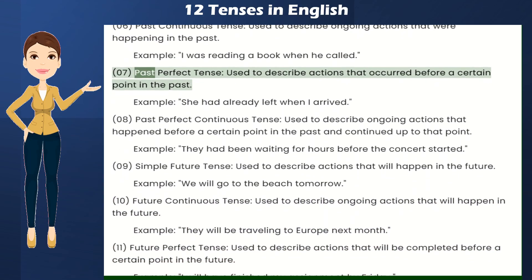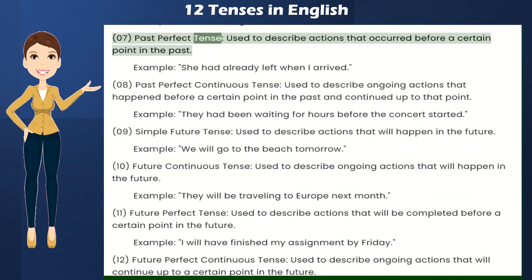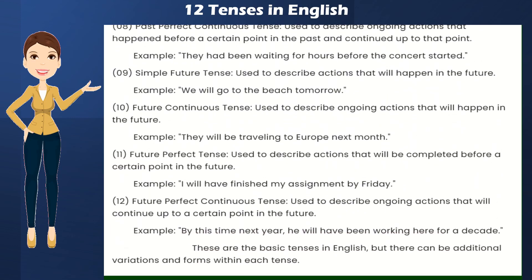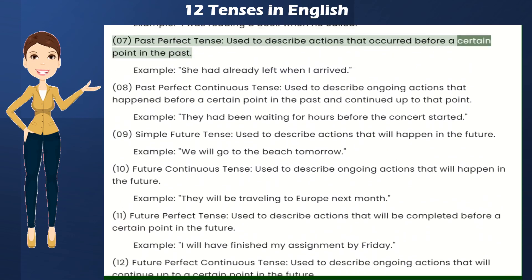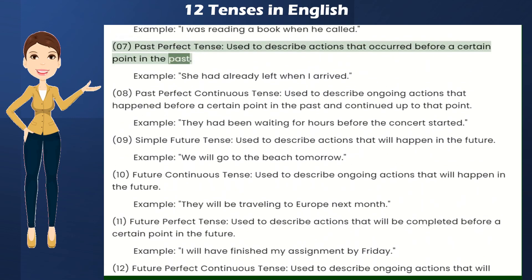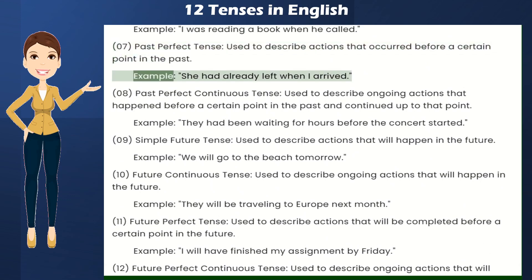Past Perfect Tense — used to describe actions that occurred before a certain point in the past. Example: She had already left when I arrived.